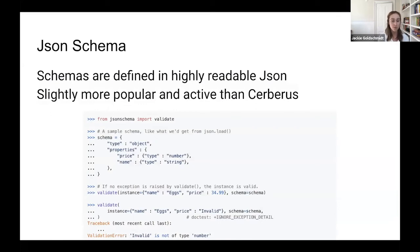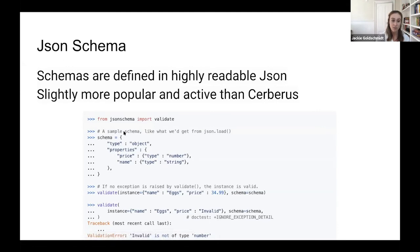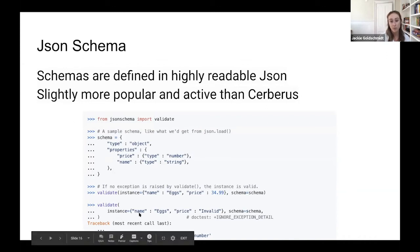Another open source validation tool is JSON Schema. JSON Schema is a bit more popular than Cerberus and is more active on GitHub. The huge benefit to JSON Schema is that rather than defining data schemas in code, you're defining them inside a highly readable JSON. You import validate from JSON Schema, define the schema using a Python dictionary — which is adjacent to JSON — and then run the validate call. If something is not valid as per the defined schema, you get a helpful error message.